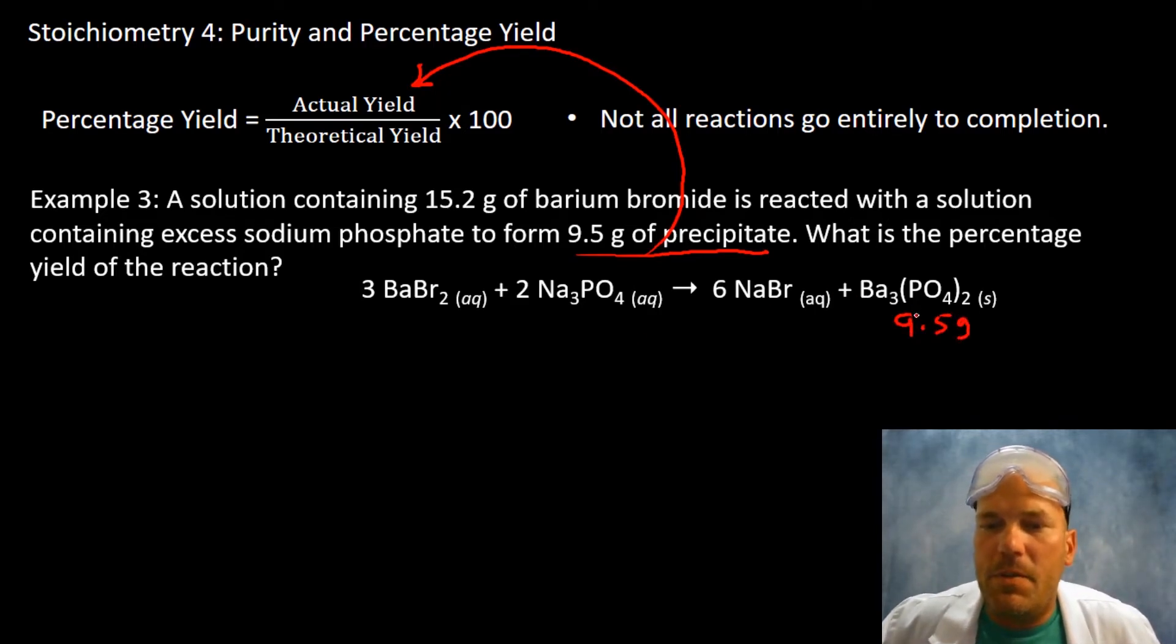Write down 9.5 grams here and we want to know what is the percentage yield of this process. And we have 15.2 of the barium bromide and we are going to assume that all of the barium bromide is going to be consumed. This is going to go entirely to completion with regard to the limiting reactant. And we're going to have leftover sodium phosphate when this is all said and done, so our stoichiometry will begin with the 15.2 grams of the barium bromide.